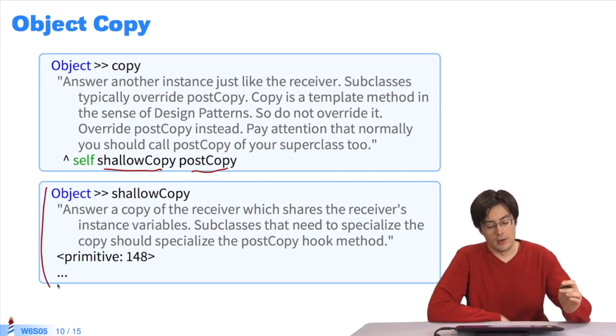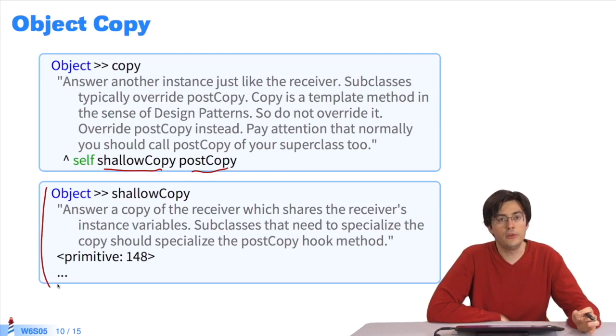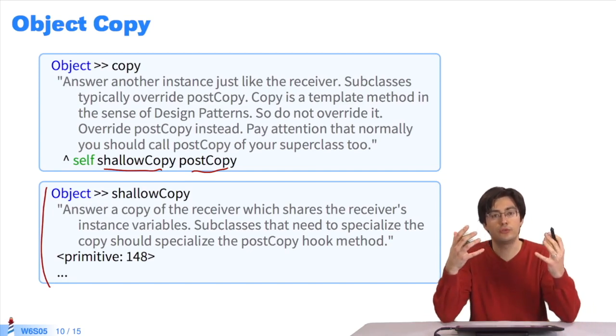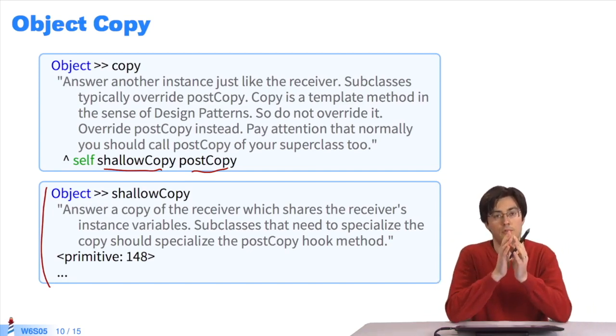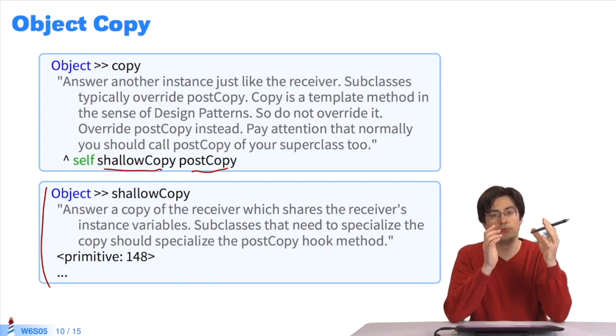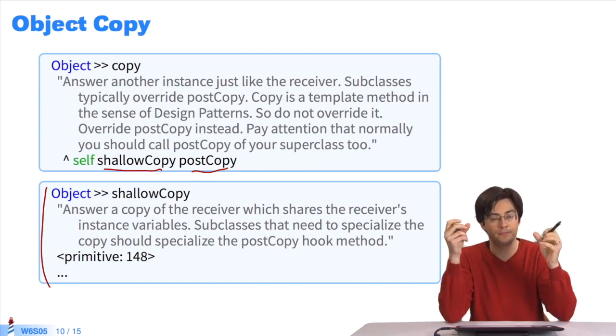What does shallowCopy do? It creates a new object that shares all instance variables with the base object. We have two objects and their instance variables are the same. If I modify the instance variable of one object, I modify the other too.